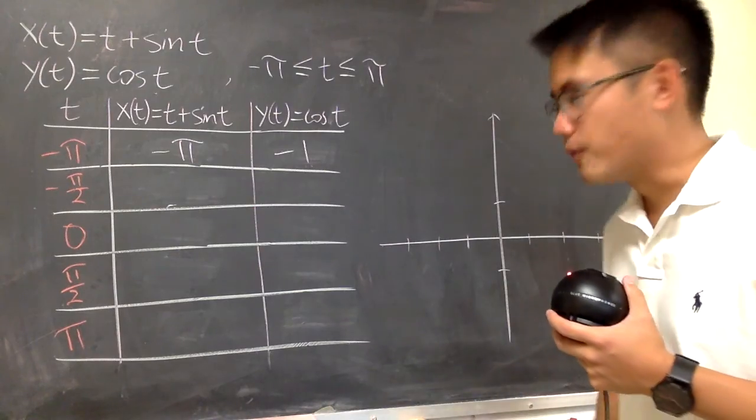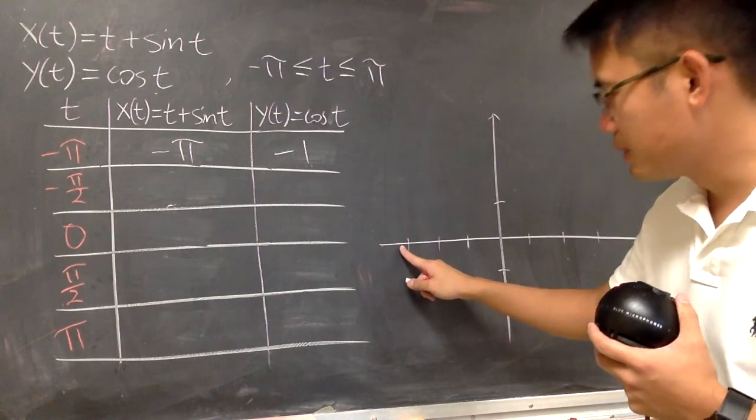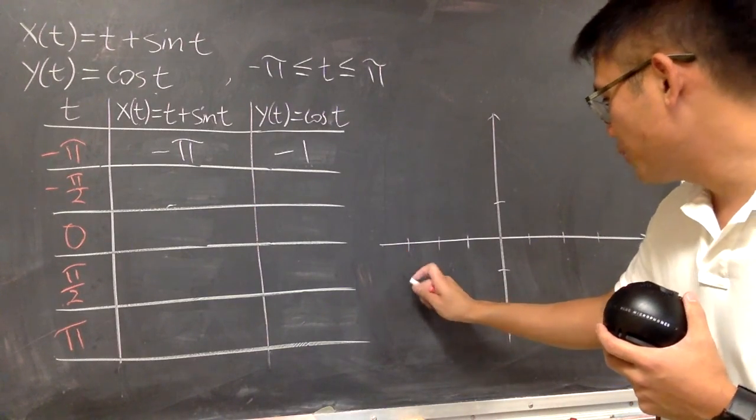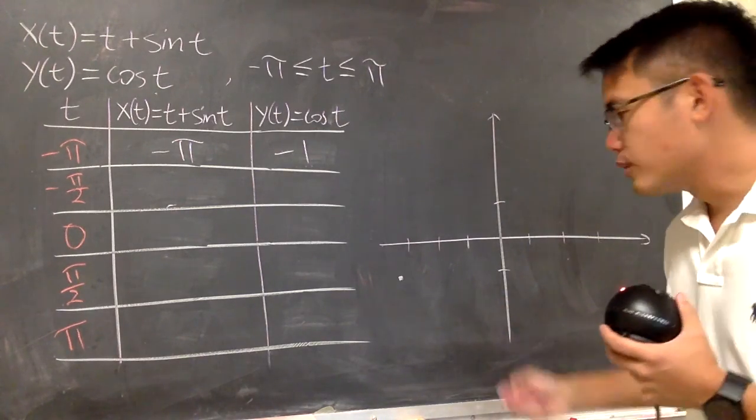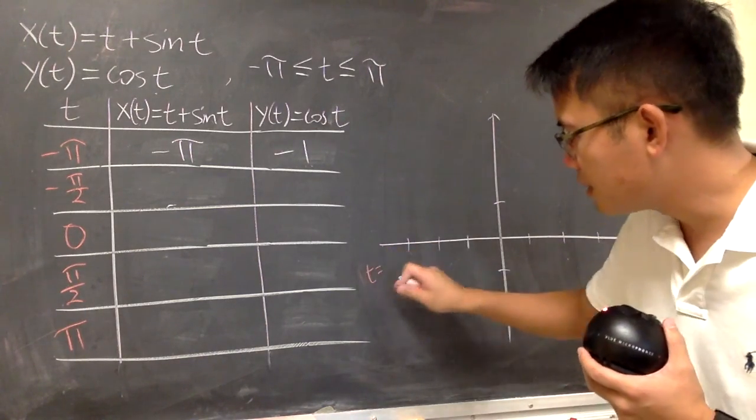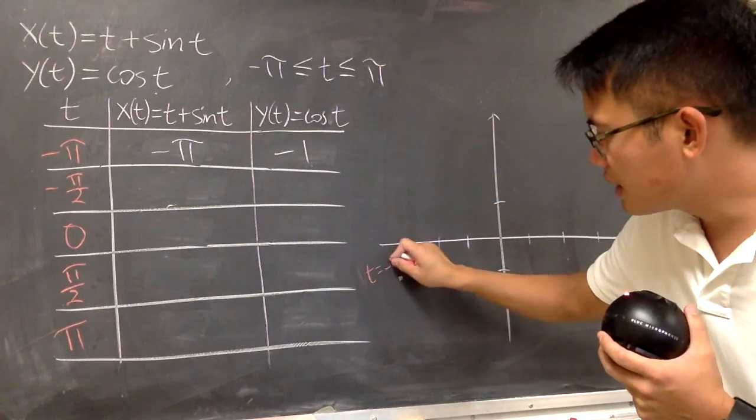Negative pi is about negative 3.14, so I will just go a little bit to the left, and then go down, this is negative 1 for the y, so this is my first point. And it's also a good idea to indicate that this is when t equals negative pi.